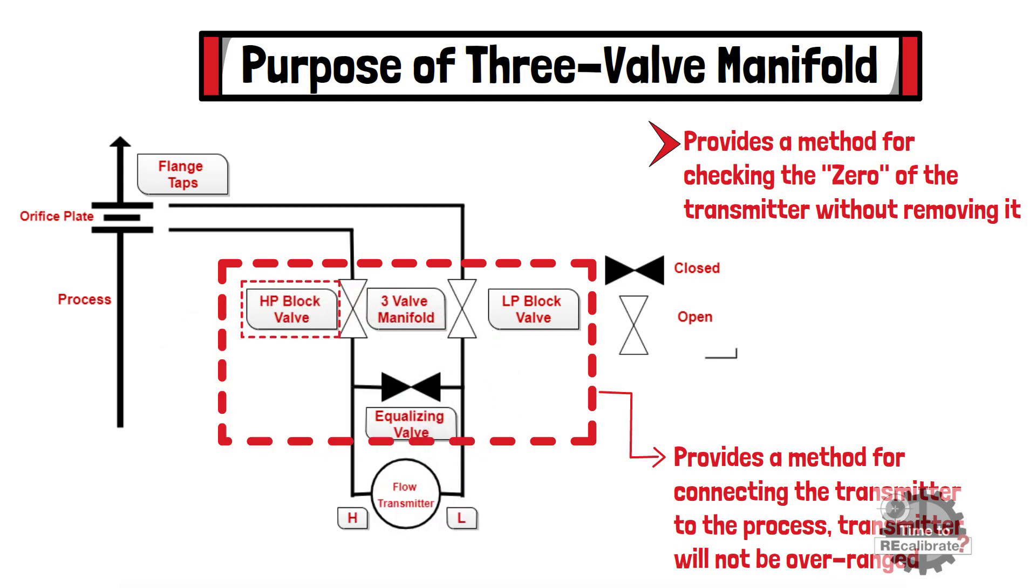The three valve manifold consists of two block valves and one equalizing valve. The block valves isolate both the high and low pressure impulse lines, while the equalizing valve ensures the pressure difference between the high and low side remains effectively zero during the process of removing from service or putting into service.